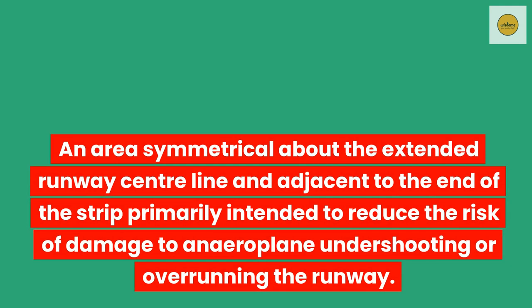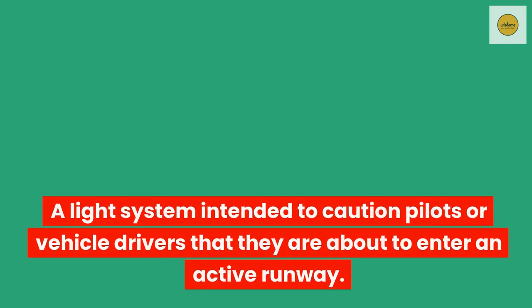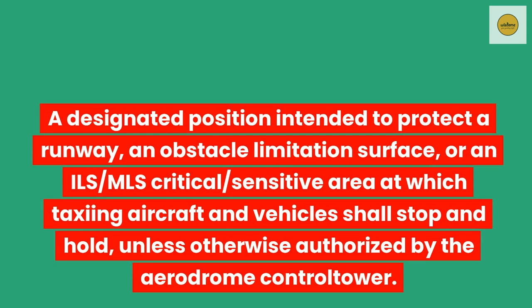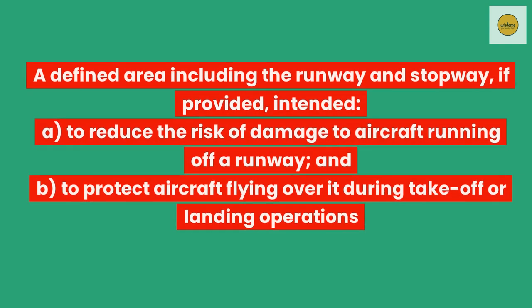Runway end safety area (RESA). An area symmetrical about the extended runway centerline and adjacent to the end of the strip, primarily intended to reduce the risk of damage to an aeroplane undershooting or overrunning the runway. Runway guard lights. A light system intended to caution pilots or vehicle drivers that they are about to enter an active runway. Runway holding position. A designated position intended to protect a runway, an obstacle limitation surface, or an ILS/MLS critical/sensitive area at which taxiing aircraft and vehicles shall stop and hold, unless otherwise authorized by the aerodrome control tower. Runway strip. A defined area including the runway and stopway, if provided, intended to reduce the risk of damage to aircraft running off a runway, and to protect aircraft flying over it during take-off or landing operations.